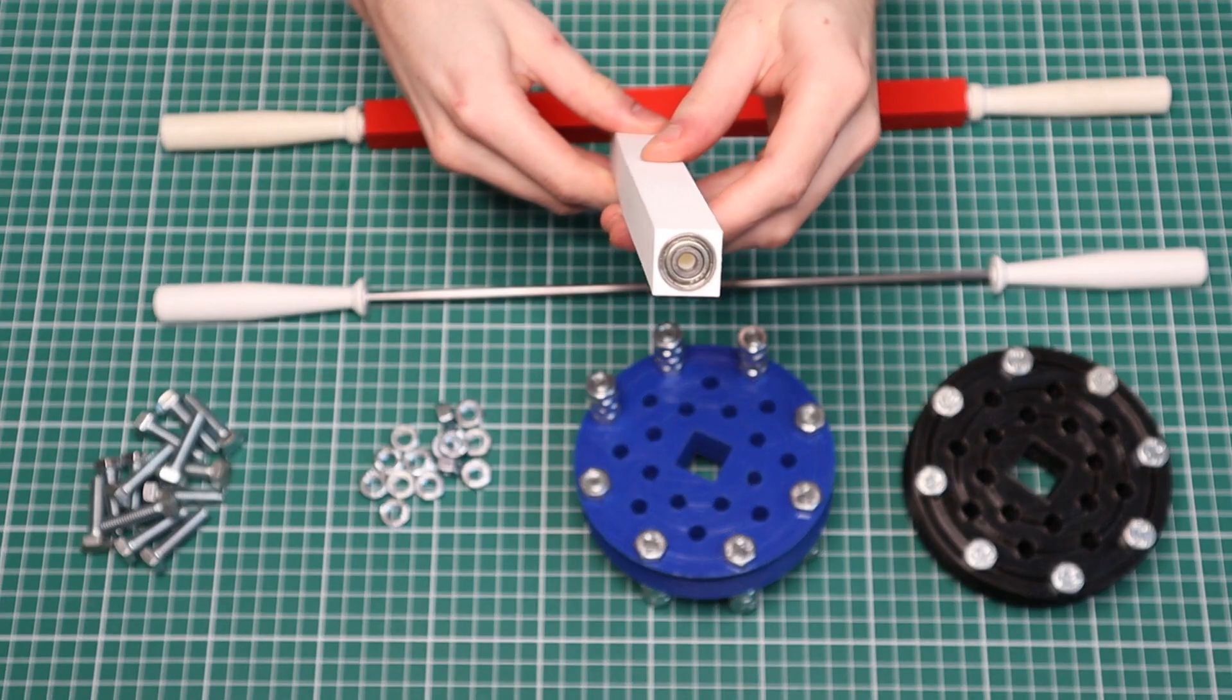Now this shaft consists of two handles on either end connected to each other via this steel rod in the middle, and around that steel rod this white bit can rotate freely supported on two bearings on either end.